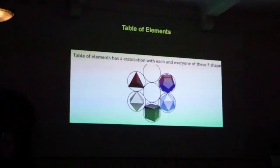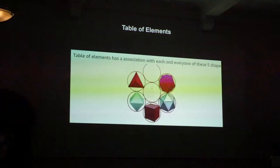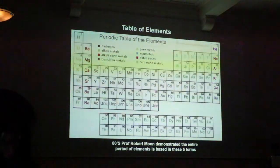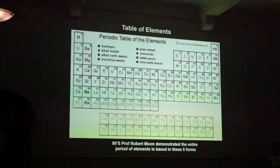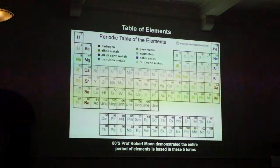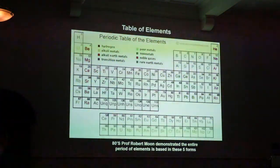In the 1980s, Professor Robert Moon at the University of Chicago demonstrated the entire periodic table and literally everything in the physical world is actually based on these five forms. So physics, chemistry, biology, sacred geometrical patterns are all being rediscovered.